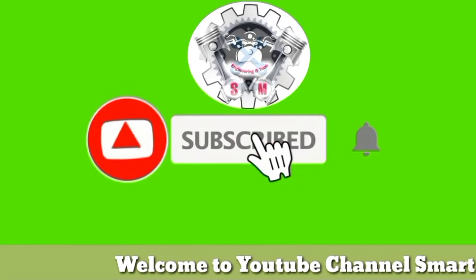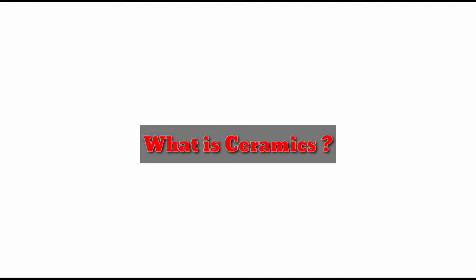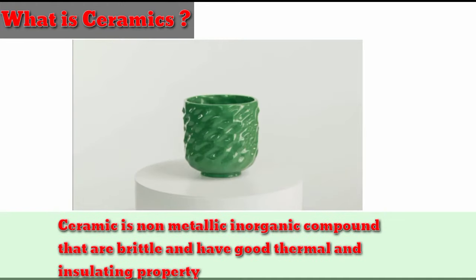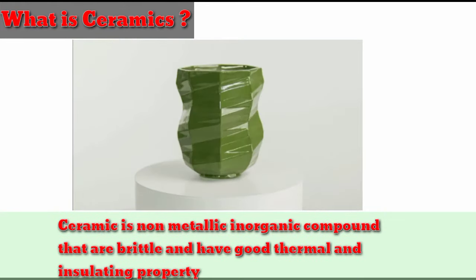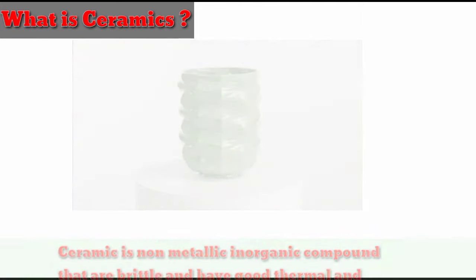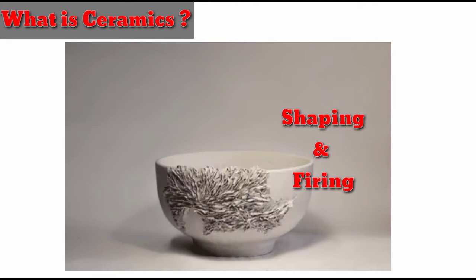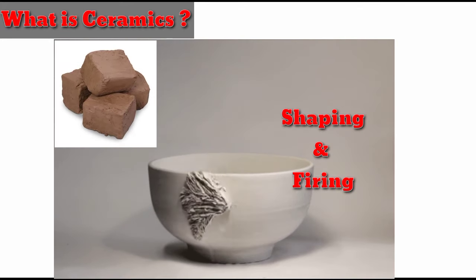Welcome to my YouTube channel Smart Engineer. Today we will study about what is ceramic. Ceramic is a non-metallic inorganic compound that is brittle and has good thermal and insulating properties. Ceramic is made by shaping and then firing a non-metallic mineral, such as clay, at a high temperature.